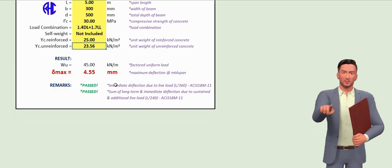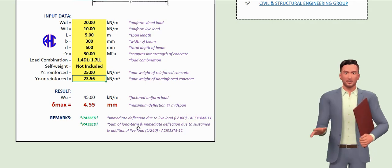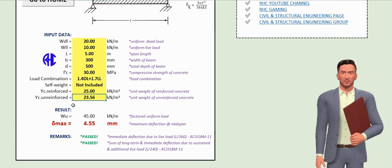Under the remarks, you have two checkings. One is for immediate deflection due to live load, and the other is for the sum of long-term and immediate deflection due to sustained and additional live load.